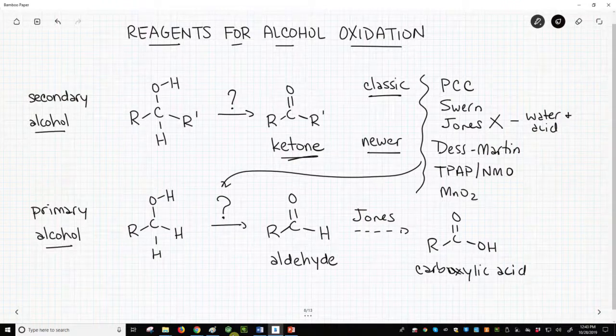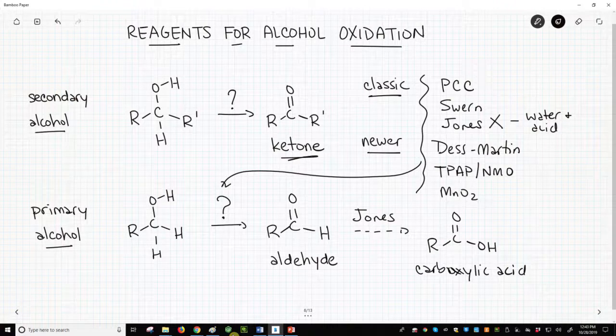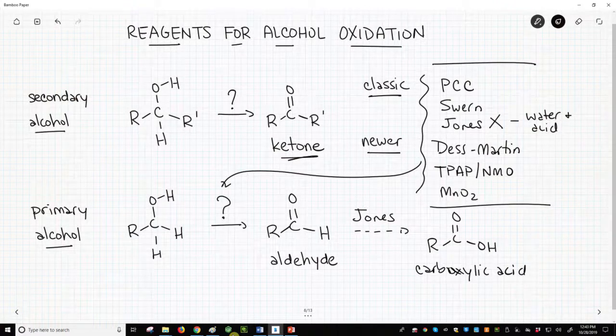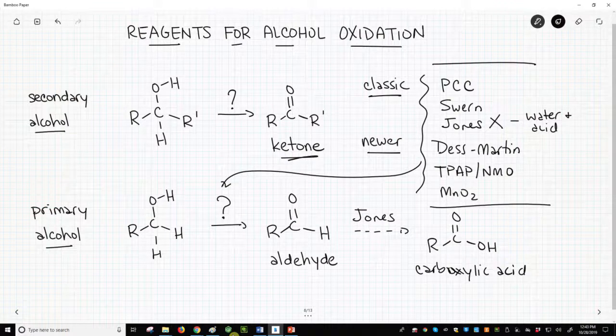So these are the common alcohol oxidizing reagents, the ones toward the upper left of the screen, that transform a primary alcohol to an aldehyde or a secondary alcohol to a ketone. If you want to make an aldehyde, however, don't use the Jones oxidation.